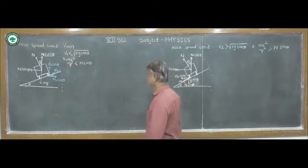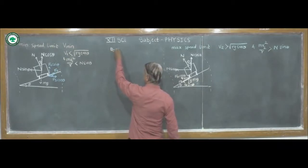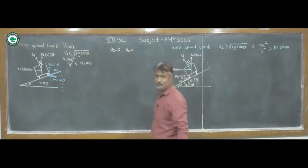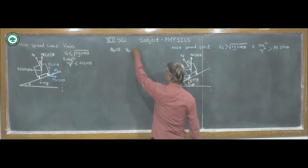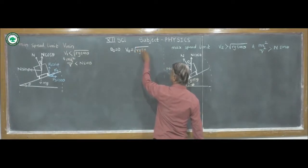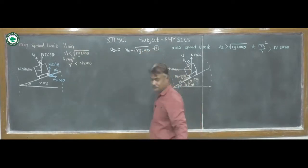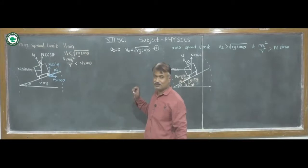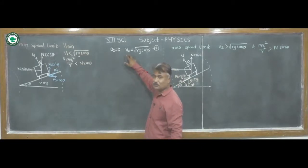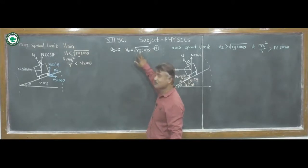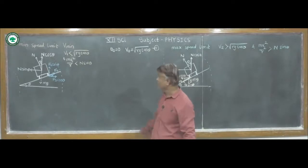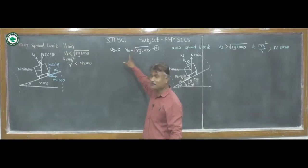When a vehicle is moving along a banked road and the coefficient of friction μs is equal to 0, the safe speed of the vehicle is given by Vs, also called the optimum speed of the vehicle. It is equal to √(Rg tan θ). Remember this as equation 1. Here R is the radius of curvature of the road surface, g is the acceleration due to gravity, and θ is the angle of banking.